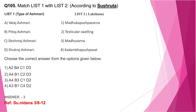Question number 105: From Sushruta Ashmari Nidana — A: Vata ja Ashmari is Kadamba Pushpavat; B: Pitta ja Ashmari has Madhu Varna; C: Shleshma ja Ashmari has Madhuka Pushpa Varna; D: in Shukra ja Ashmari there is testicular swelling. The correct answer is option 3. Compare and learn these Lakshanas with those of Ashtanga Hrudaya, as there are slight differences which can be confusing.